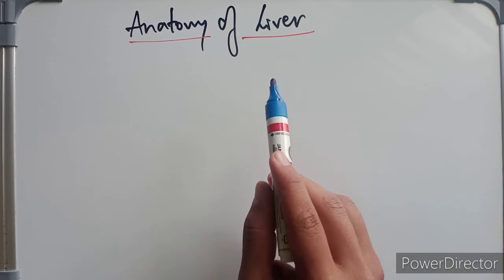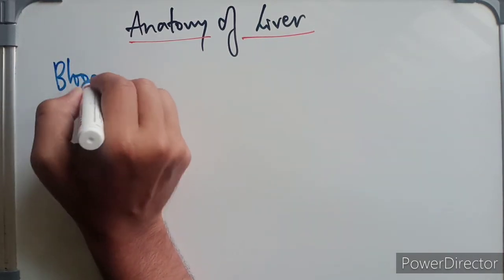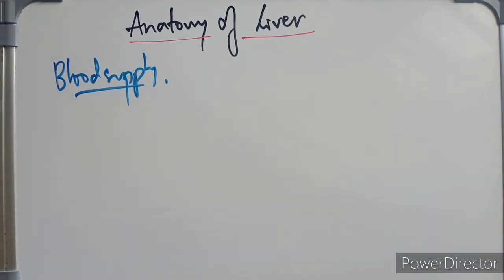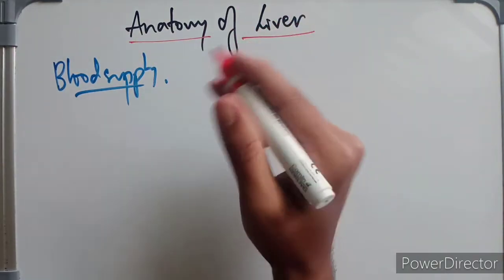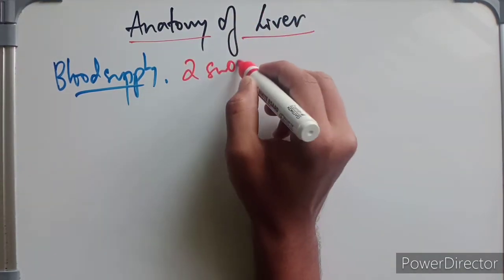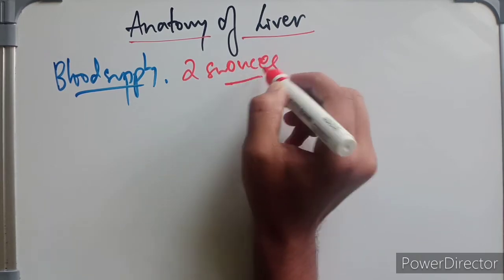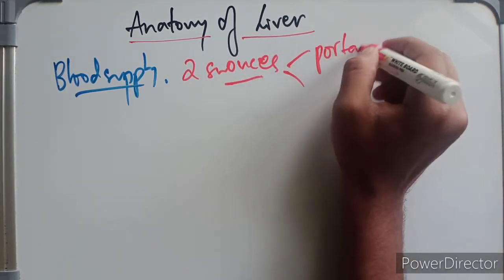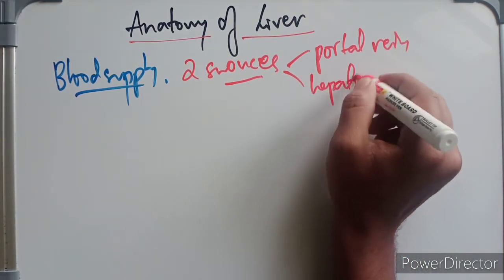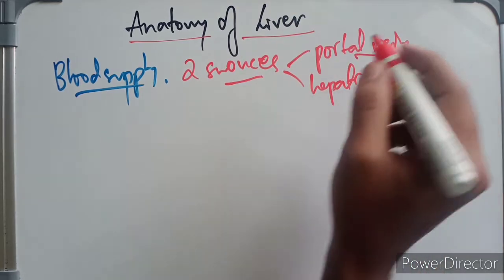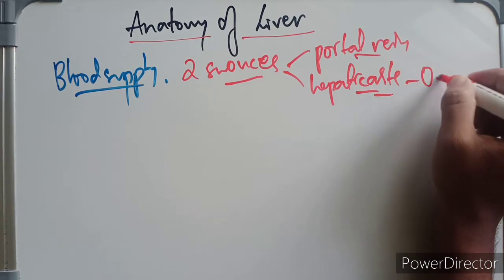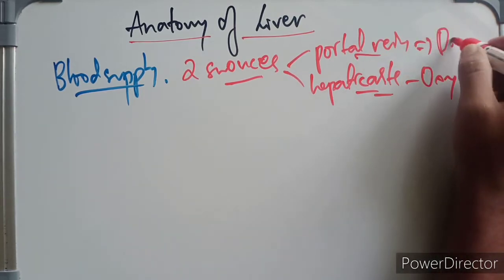Coming to the blood supply of the liver — the liver is a highly vascular organ, so it receives its blood supply from two sources. One is the portal vein and the other is the hepatic artery. The hepatic artery is oxygenated while the portal vein is deoxygenated but contains lots of nutrients.